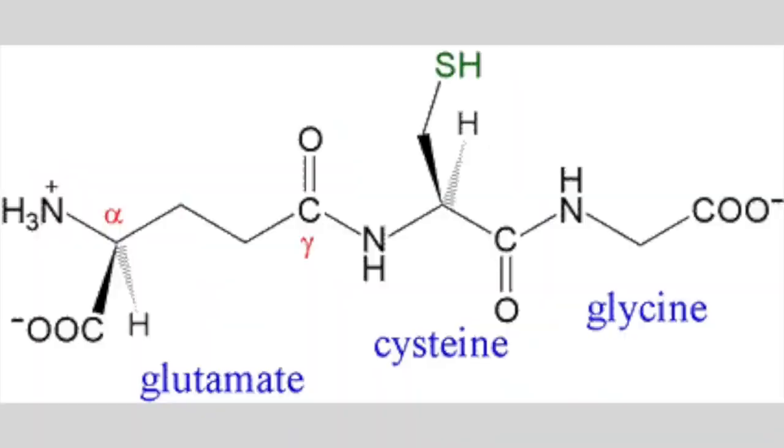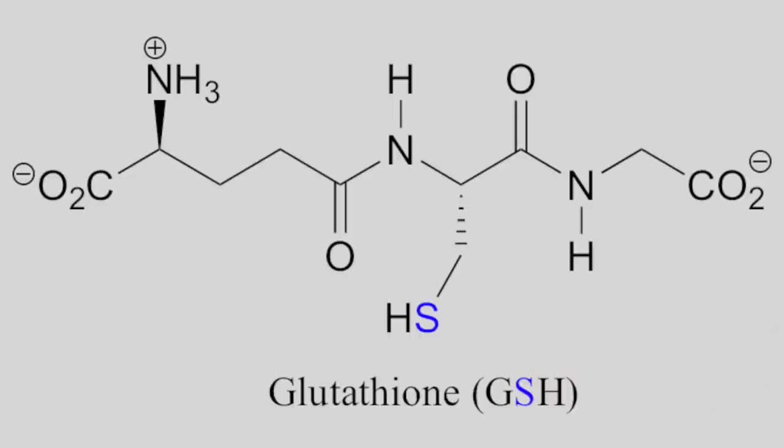Glutathione is actually a peptide — a peptide of three different amino acids: glutamic acid, cysteine, and glycine. Those three amino acids combined create a peptide also known as GSH or glutathione. Glutathione has a lot of different functions within the body, but it's mainly geared towards oxygen metabolism.